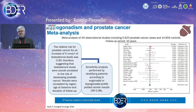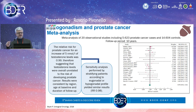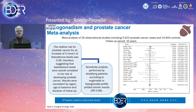Regarding prostate cancer, there was in the past quite a debate about the role of testosterone. A recent meta-analysis of 20 observational studies including more than 5,000 prostate cancer cases and 14,000 controls, followed for 10 years, demonstrated that the relative risk for prostate cancer for an increase of 5 nanomoles per liter of testosterone was 0.99 — essentially less than one. Sensitivity analyses stratifying patients as eugonadal or hypogonadal gave similar results, excluding the role of testosterone in the development of prostate cancer.